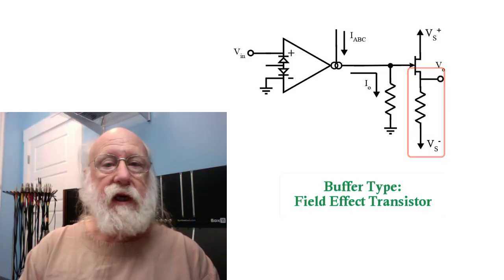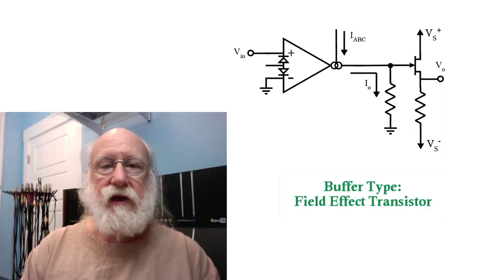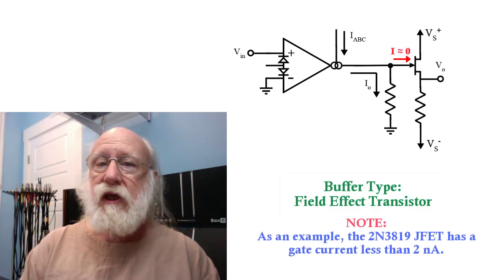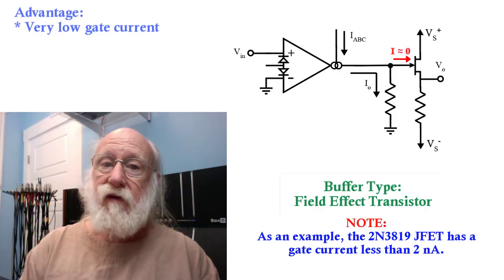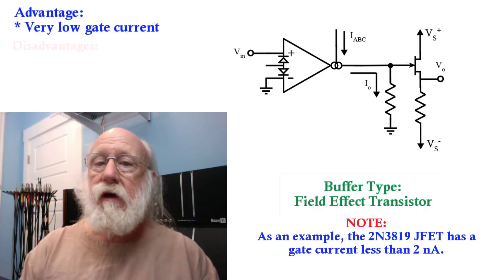The big advantage, particularly if you use a MOSFET, is that the current stolen from the resistor doing the current to voltage conversion really is very small.